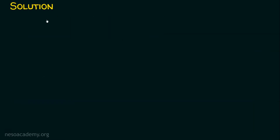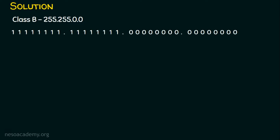We know the organization is initially with the class B subnet mask 255.255.0.0. If we convert this subnet mask to binary, we get all ones in the first two octets and all zeros in the next two octets, because the first two octets are 255 in decimal and the last two octets are 0 in decimal.